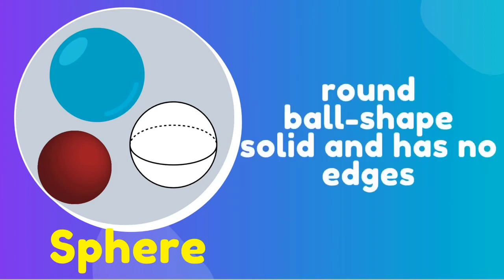The next solid figure is the sphere. It is a round, ball-shaped solid and has no edges.